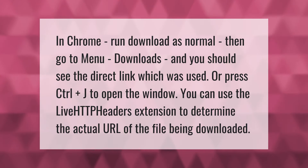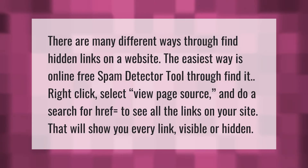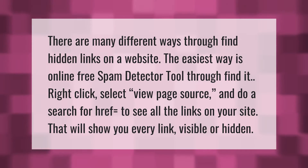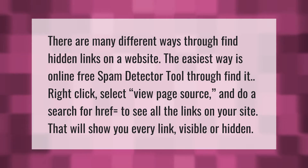There are many different ways to find hidden links on a website. The easiest way is to use an online free spam detector tool. Alternatively, find the site, right-click, and select View Page Source, then do a search for 'href=' to see all the links on your site.